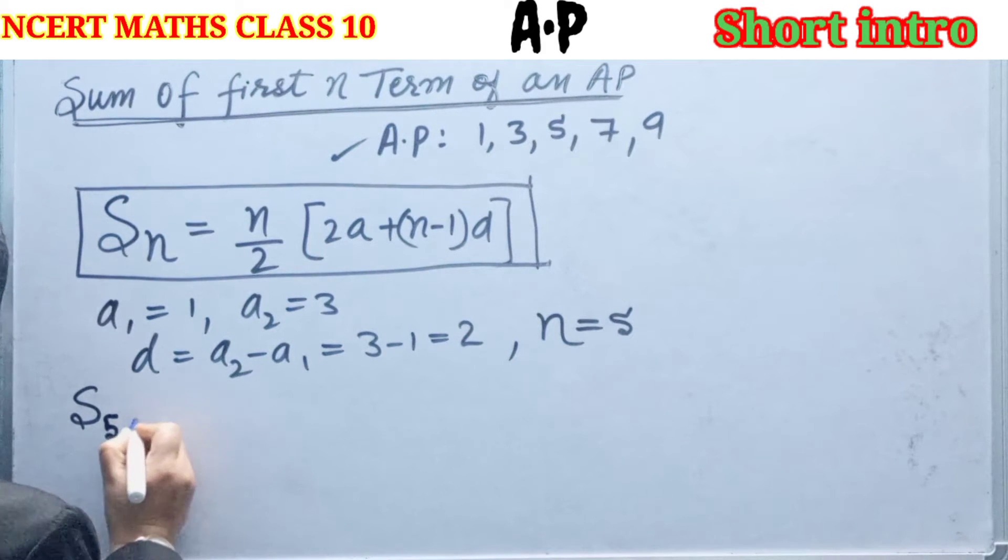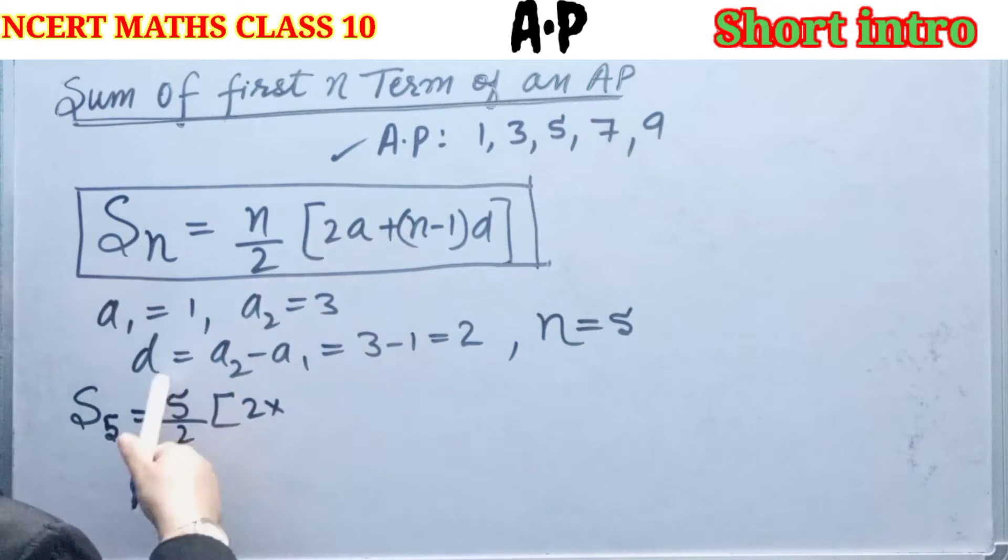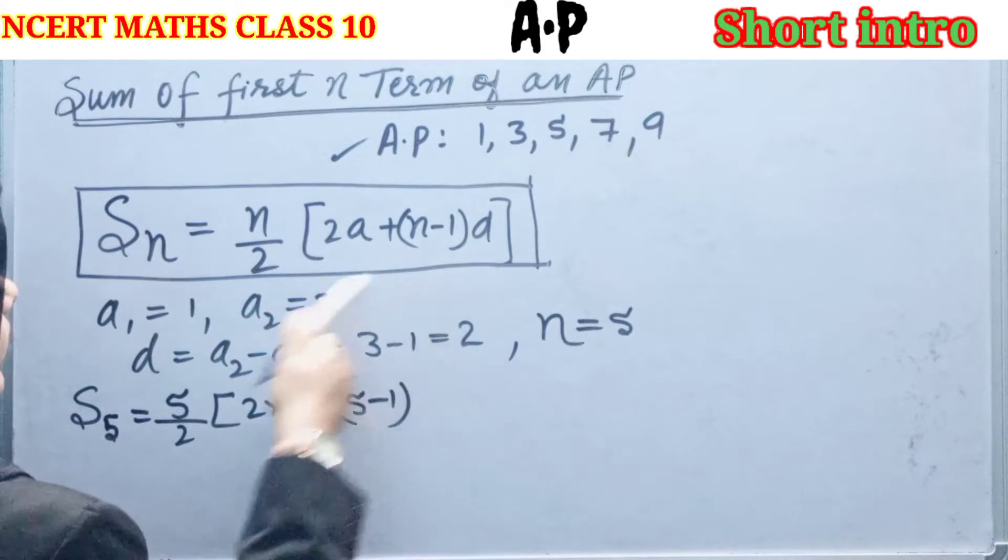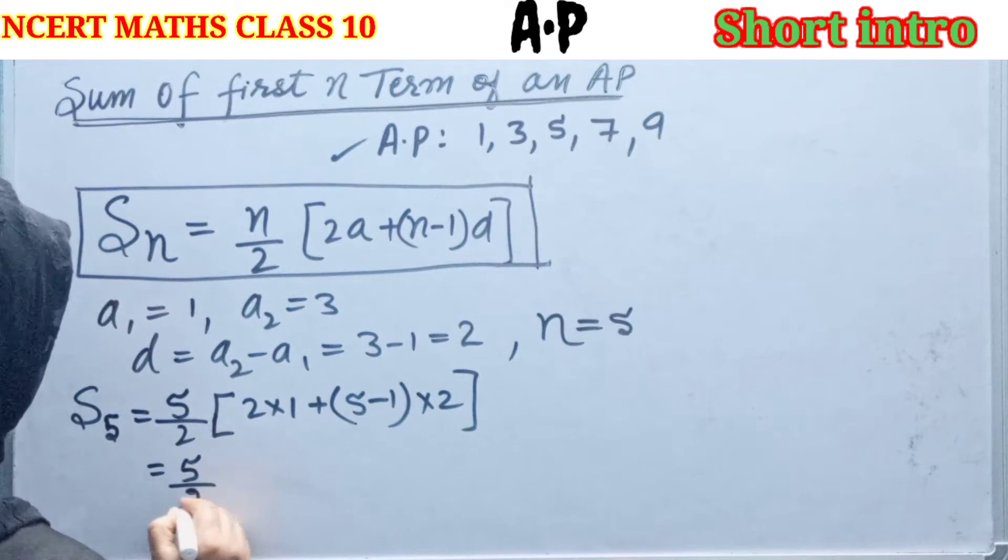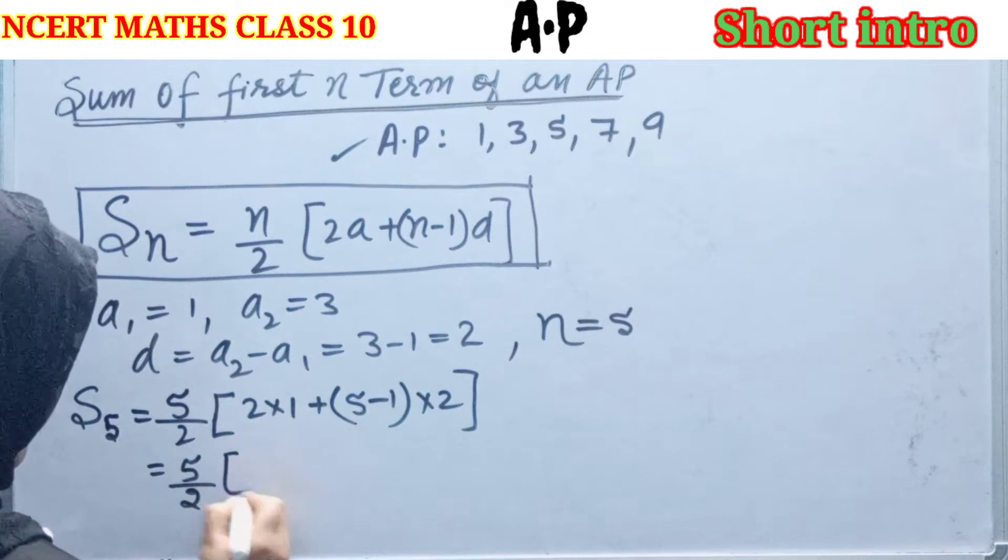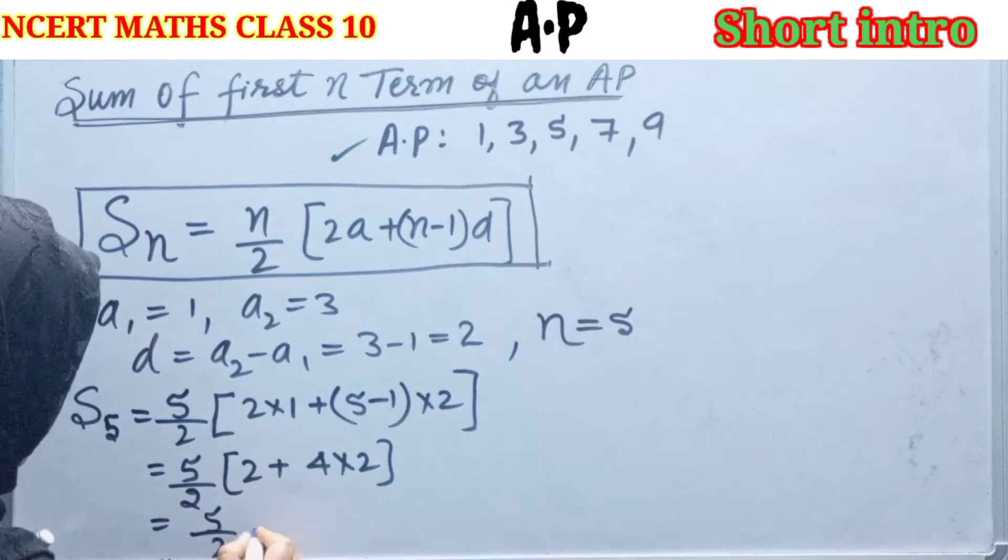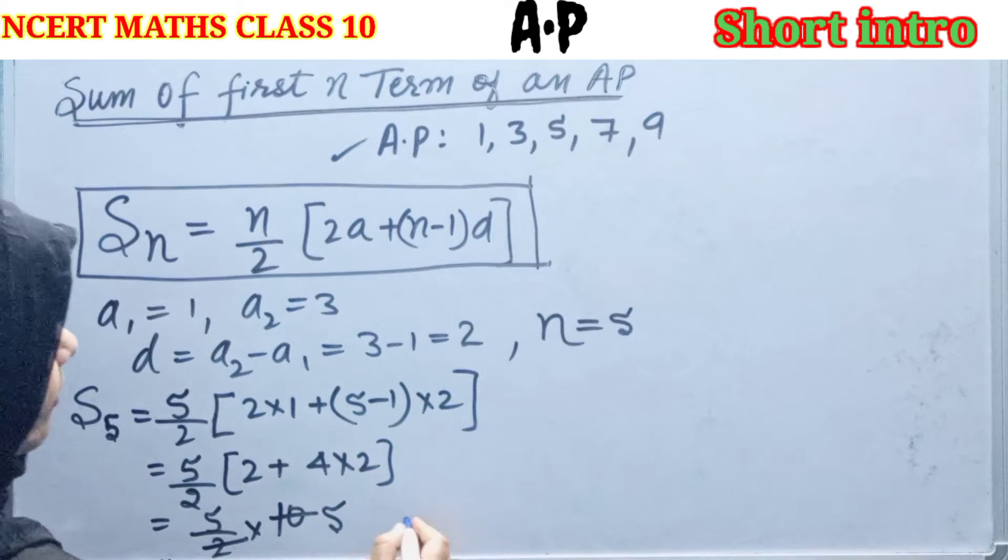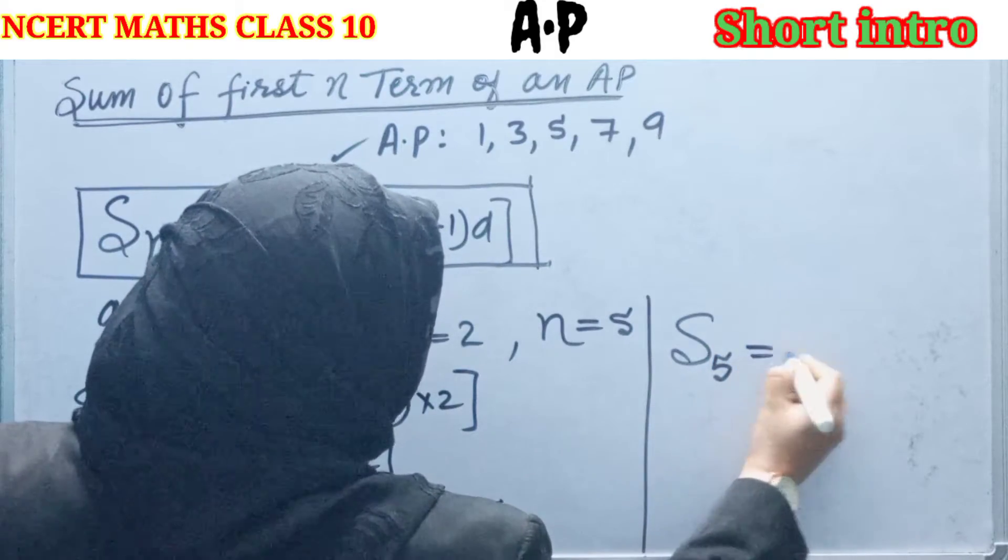Sum of 5 terms, so S5 equals to N by 2. N is 5, so 5 by 2 into 2A plus N minus 1. 2 into A, what is A? 1. Plus N minus 1, N is 5, so 5 minus 1 into D. D is 2. Now 5 by 2, 2 into 1 is 2 plus 5 minus 1 is 4, 4 into 2 is 8. 5 by 2 into 2 plus 8 is 10. 5 into 5 is 25. Sum of 5 terms of given AP is 25.